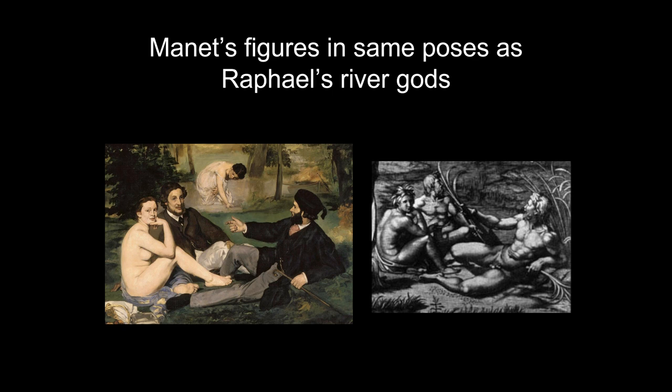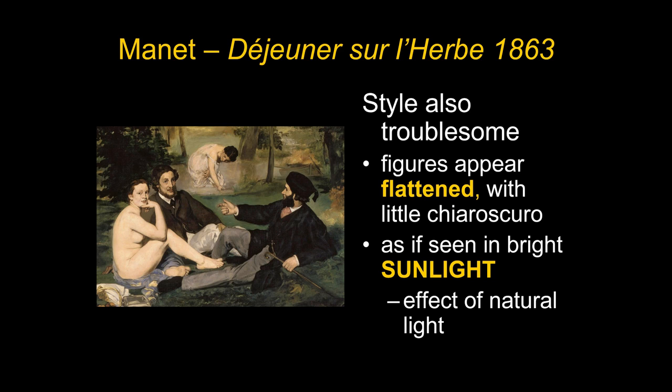There was one thing about the style that also bothered people: they felt the figures appeared to be flattened, not modeled in chiaroscuro to seem solid and volumetric. There's a reason for that. Manet looked at the actual effect of bright sunlight and realized that when something is in bright sunlight, the shadows often disappear or almost disappear. If you look at the woman, you'll see a little shadow under her thigh, under her knee, and under her elbow.